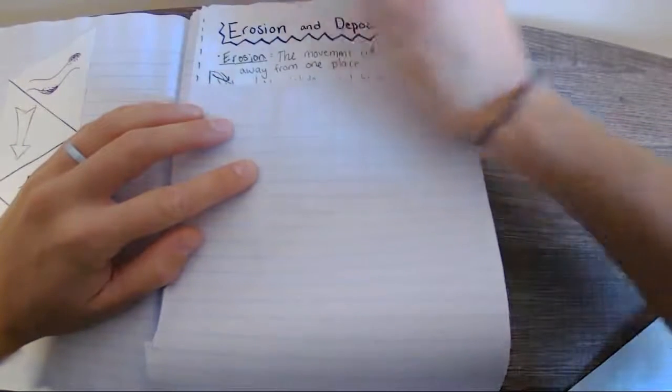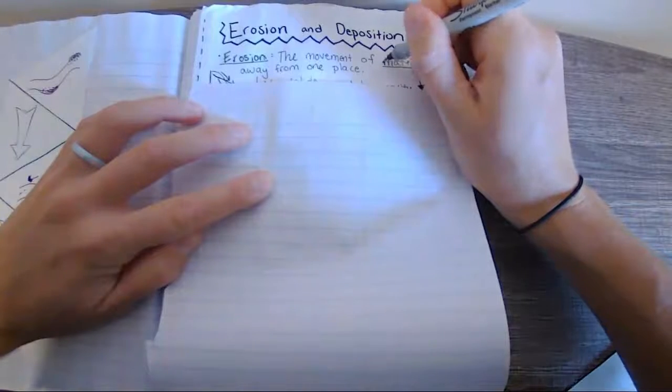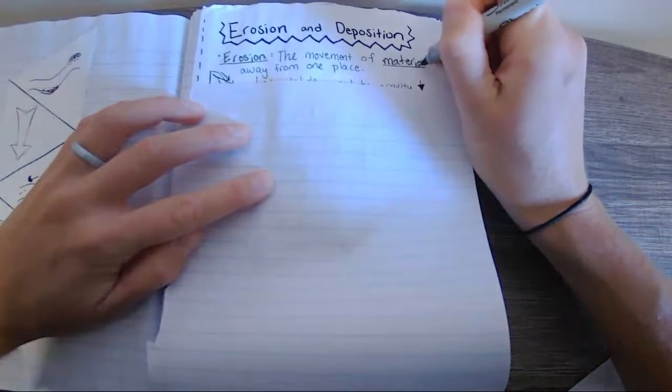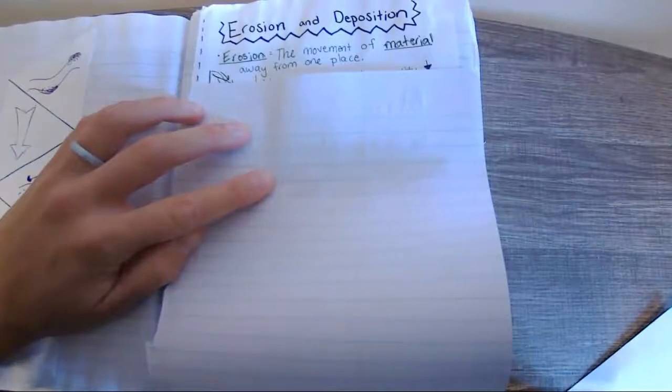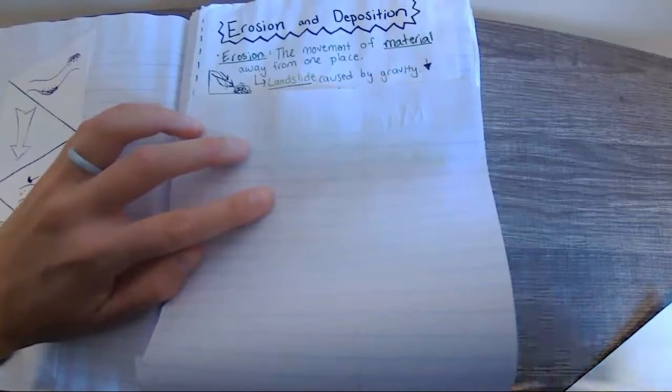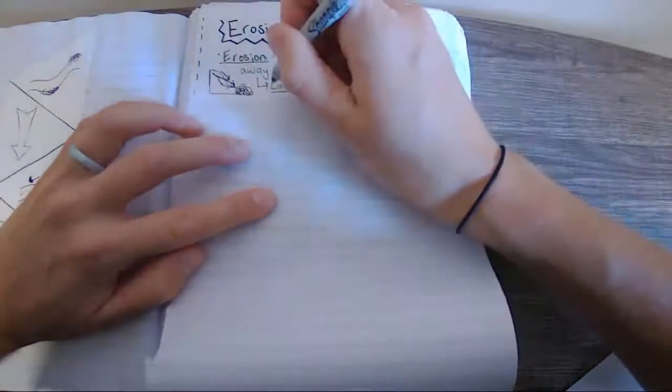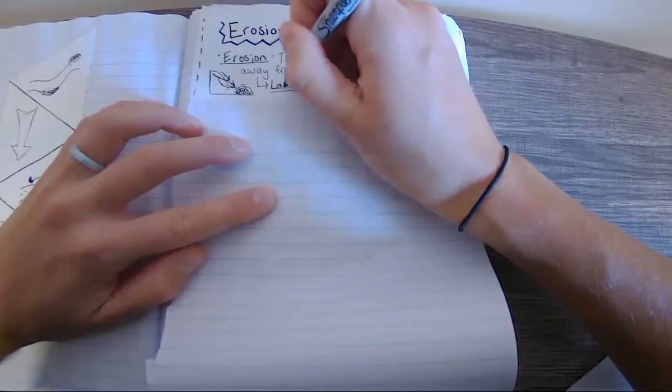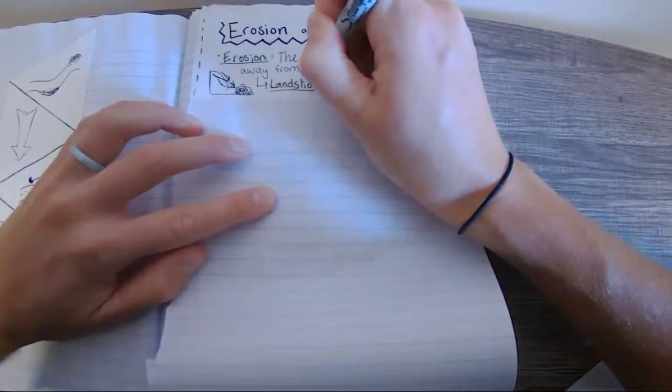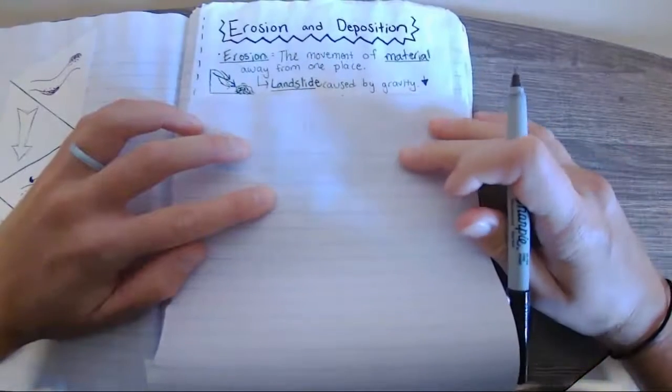This is the movement of material from away from one place. So again, your word is erosion. I'll do it in a darker color for you here. This is the movement of material from one place. So here's a picture I tried to draw of a landslide. This can cause landslides. Landslide caused by gravity.